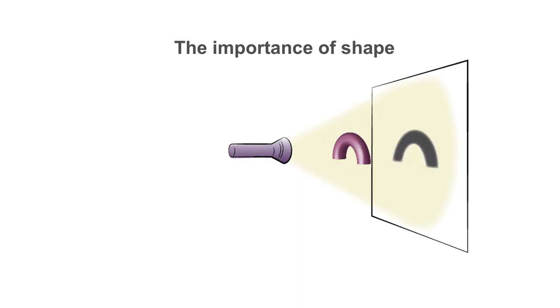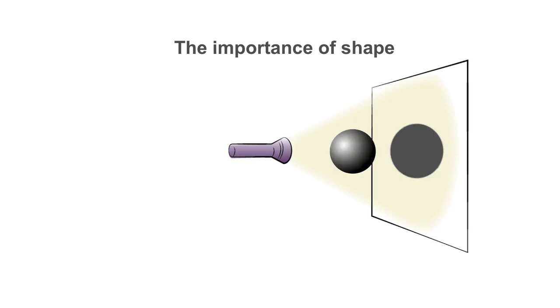If the cylinder is curved, the shadow will be an arch. If the object is a sphere, the shadow will always be a circle.